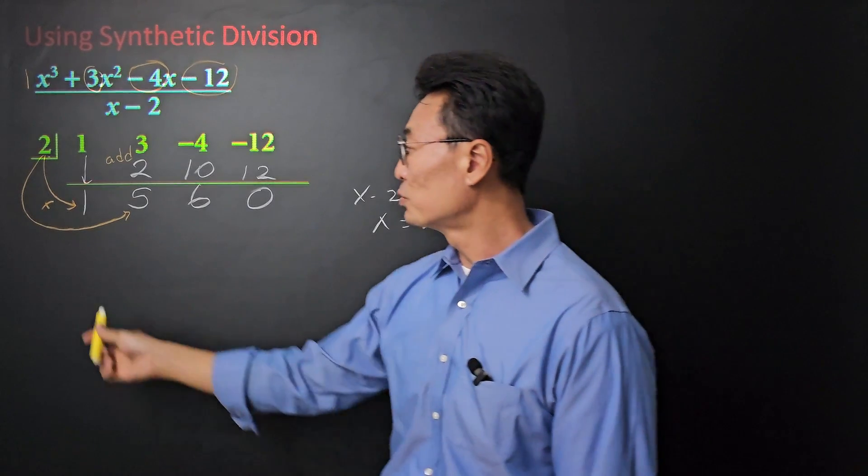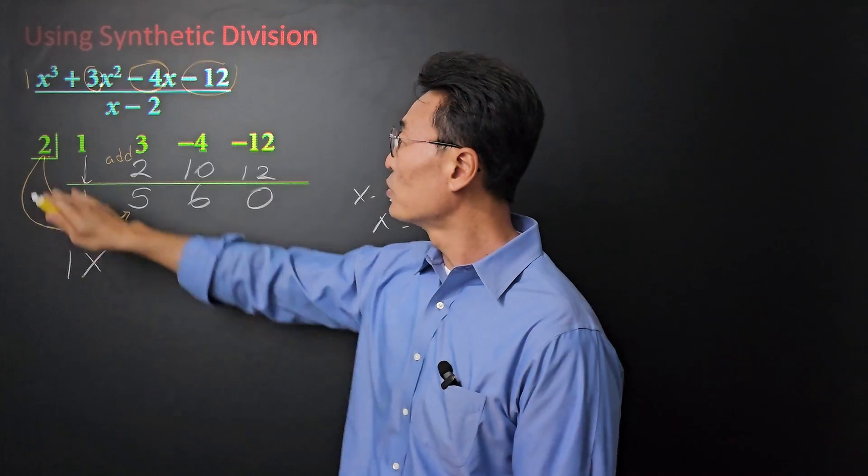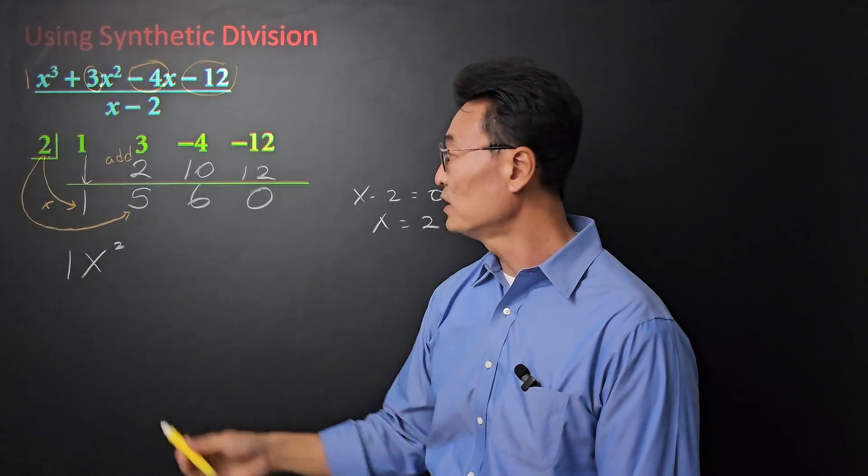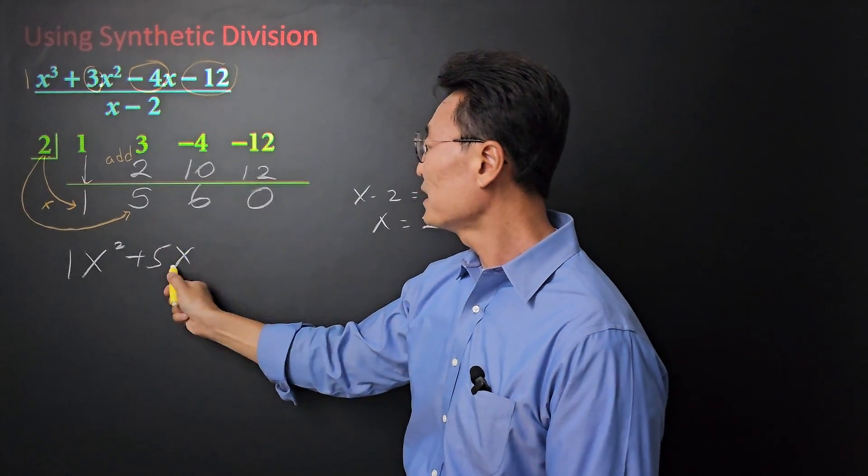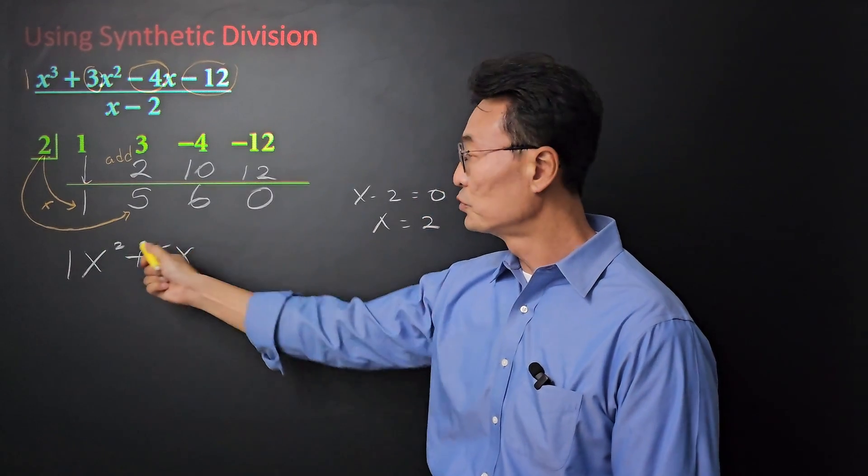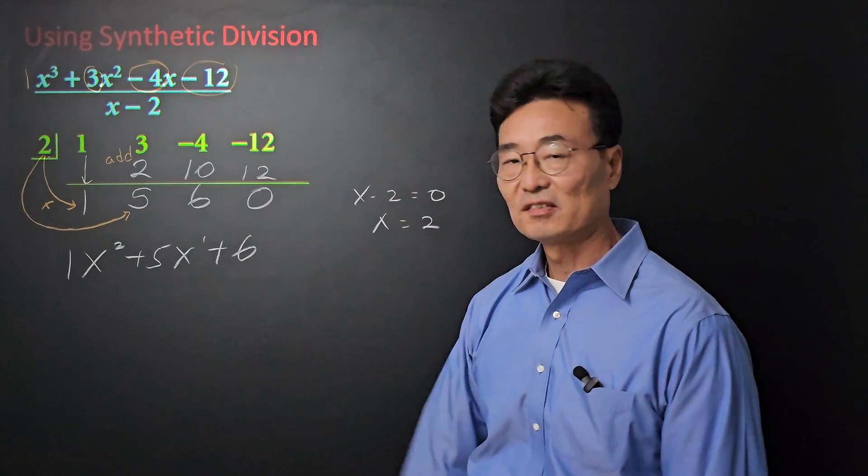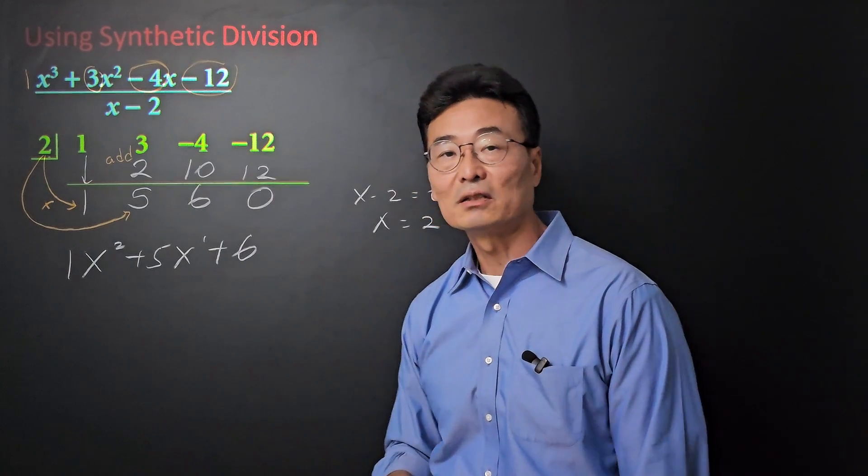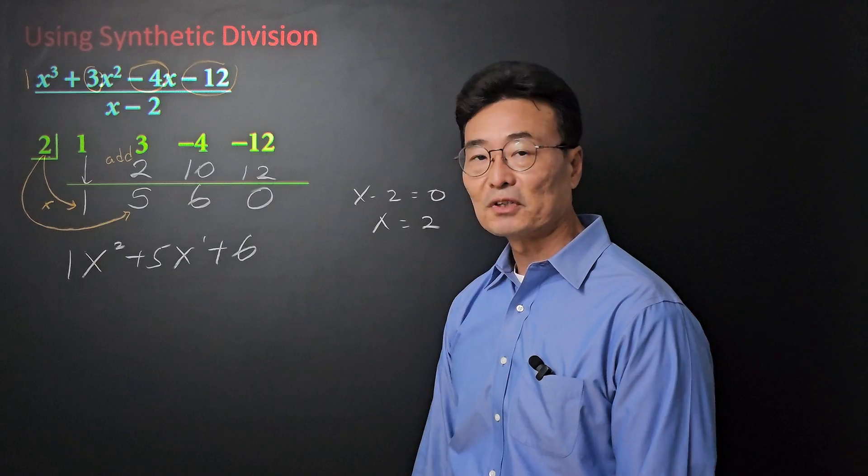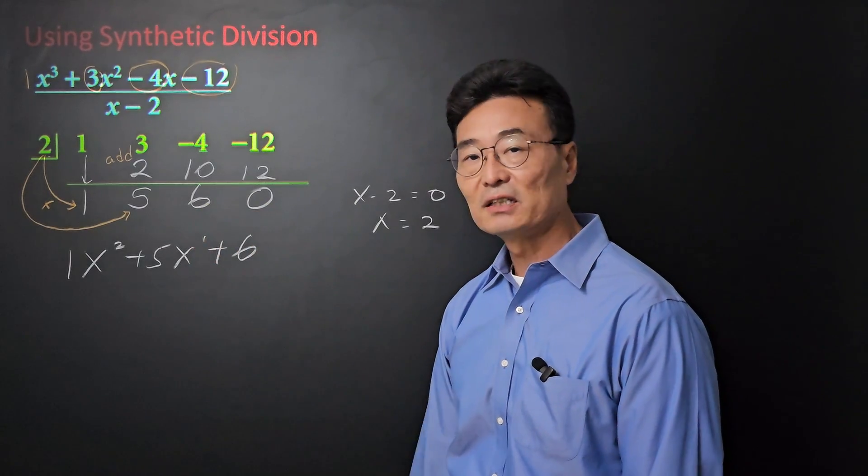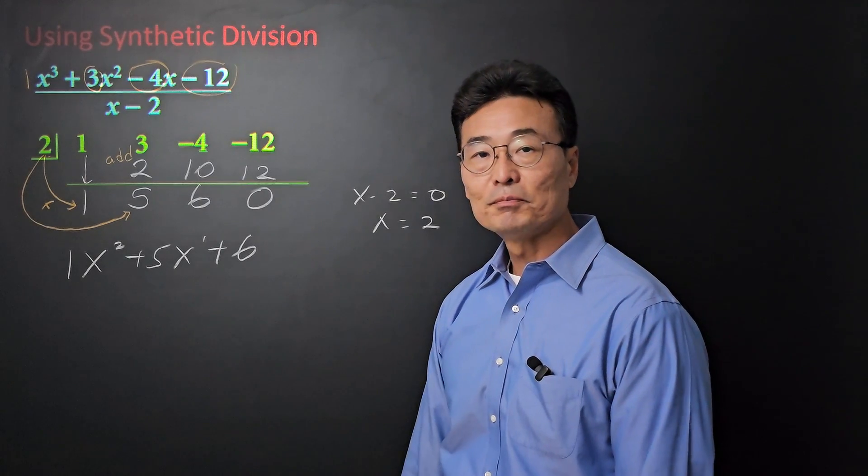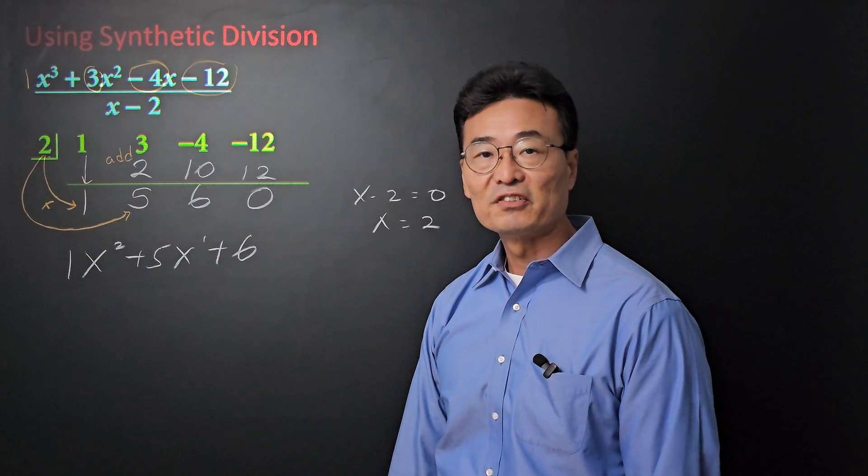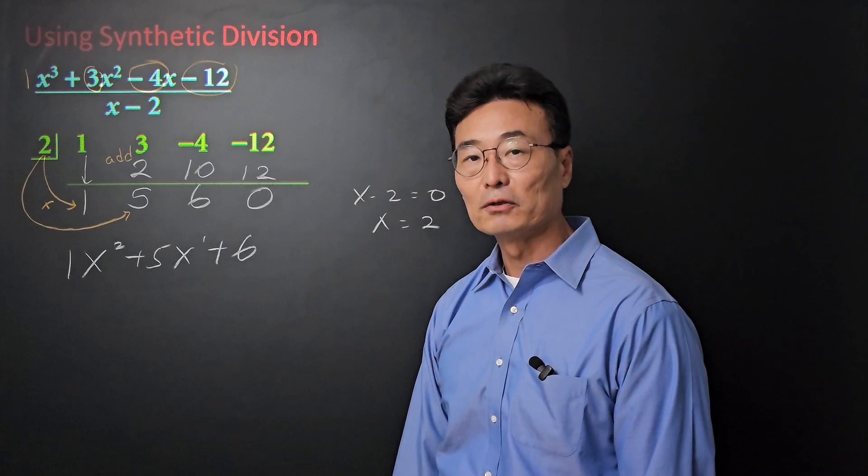Then, take that 1, 5, and 6, we're going to change it into 1x squared. Notice we started with x cubed, we go 1 less, which will be x squared, plus 5x, we go in order, plus 6. So if we did the long division, we had x squared plus 5x plus 6, however, using the synthetic division, it took a lot less time and a lot less work, and as you can see, synthetic division is almost always the preferred method when it comes to dividing polynomials.